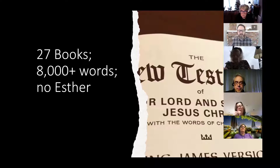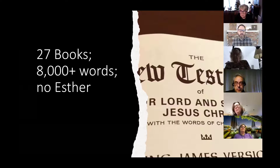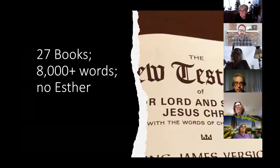As the canon was being formed, there was lots of debate about what should be included. For example, because its authorship was disputed, the book of Revelation almost didn't make it into the Bible. The Old Testament or Hebrew Bible wasn't finalized until between 90 and 100 CE. The process was occasioned by the destruction of their first temple — the Jews realized they could no longer be a people whose faith centered on the temple, and so they gathered the scrolls most important for preserving their faith tradition.